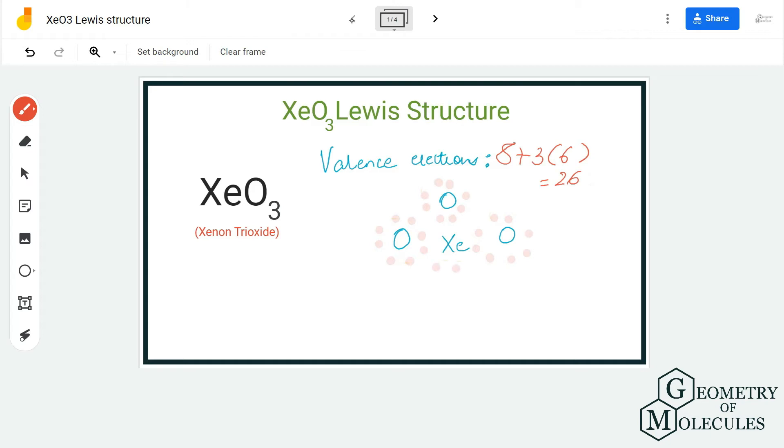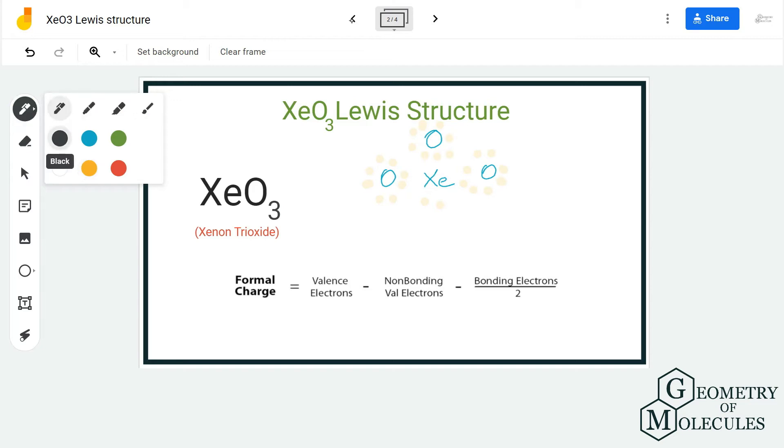Now you might think that this is the most accepted Lewis structure for xenon trioxide, but hold on. Let's check the formal charges for this molecule and find out if this is really the Lewis structure that we can move forward with. For calculating the formal charges, you can either use this formula, or we have also linked our formal charges calculator down in the description box.